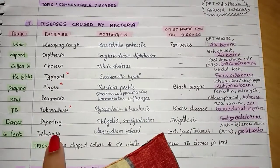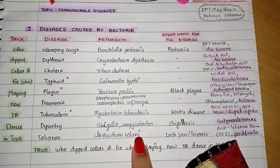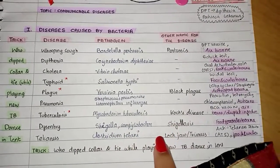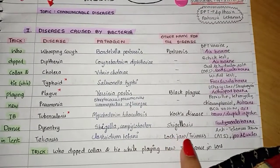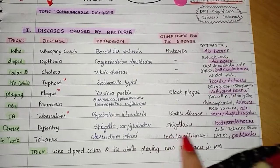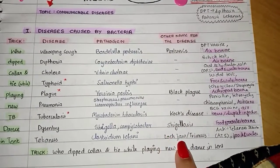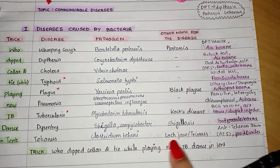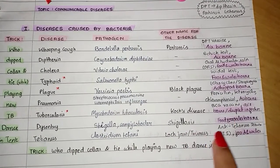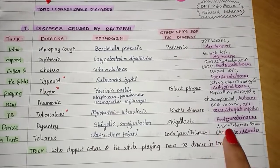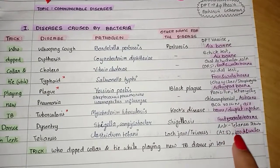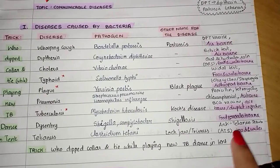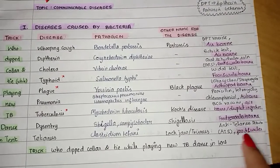For tetanus, the pathogen is Clostridium tetani; other names are lockjaw and trismus — this is really important. The treatment is anti-tetanus vaccine. It is spread through food and water.